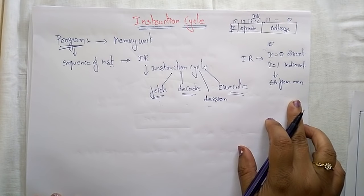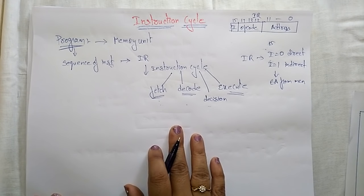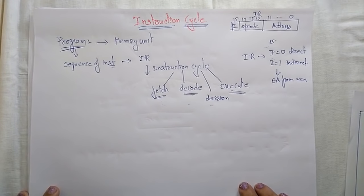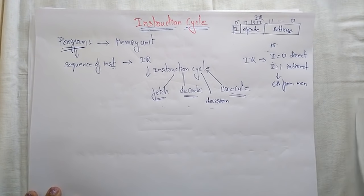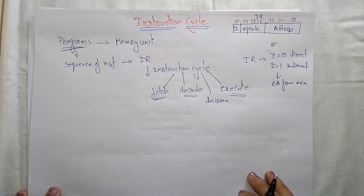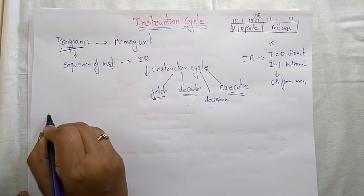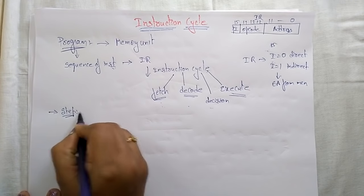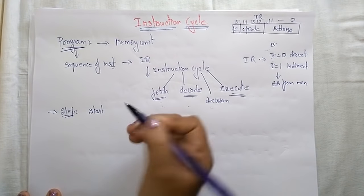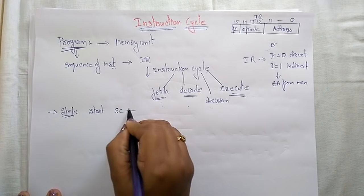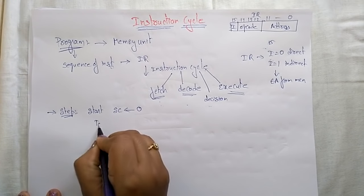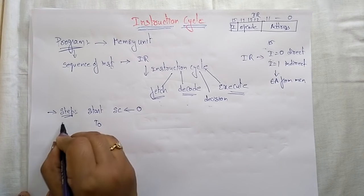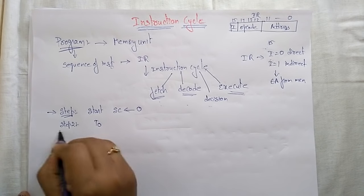If I is one, we have to read the effective address from memory. This is the instruction cycle. Now let us see how the instruction cycle will be executed in the form of a flowchart. Before discussing the flowchart, let us see the steps. First step: we have to start the program. When the sequence counter is 0, the timing pulse starts from T0.